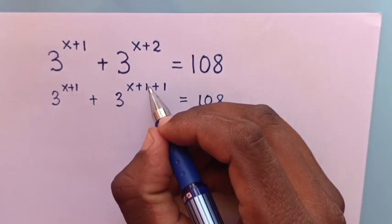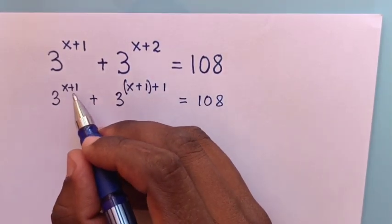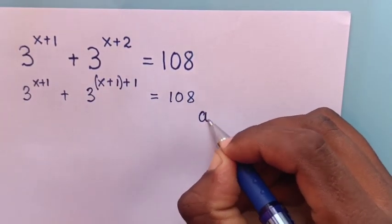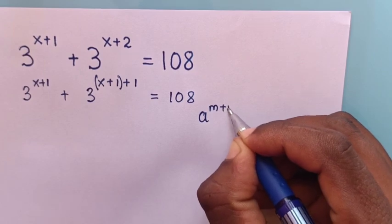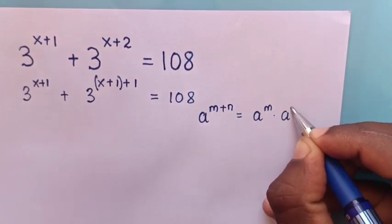Then we place bracket in here. So this power x plus 1 is same as this power x plus 1. In here we apply this rule which is a power m plus n is equal to a power m times a power n.